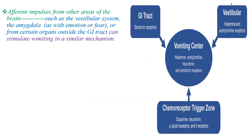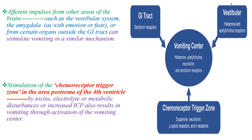Afferent impulses from other areas of the brain, such as the vestibular system and the amygdala, or from certain organs outside the GI tract can stimulate vomiting similarly. Stimulation of the chemoreceptor trigger zone in the area postrema of the fourth ventricle by toxins, electrolyte or metabolic disturbances, or increased ICP also results in vomiting through activation of the vomiting center.